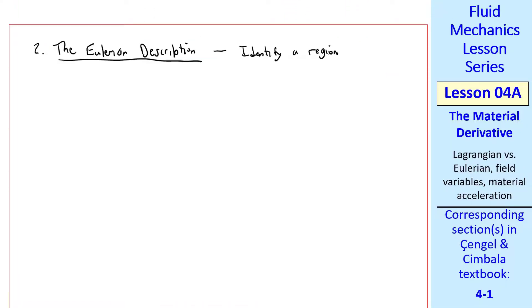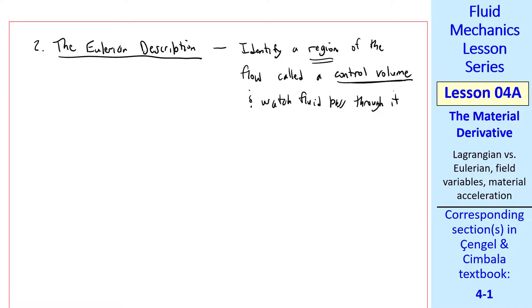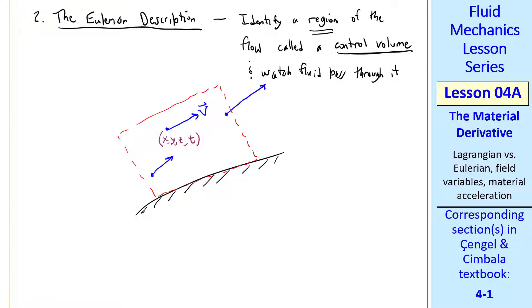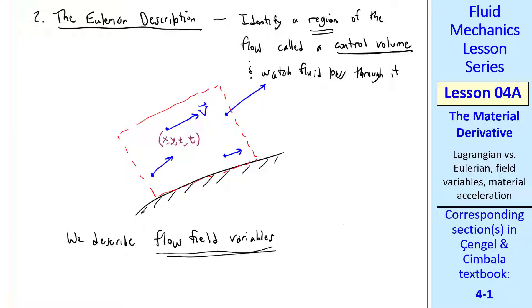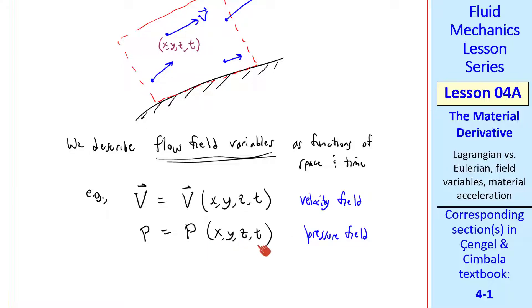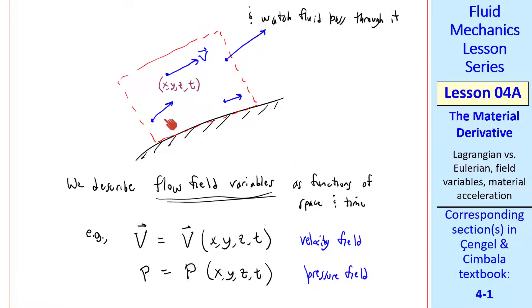The second common description is called the Eulerian description. Instead of following individual fluid particles, we identify a region of the flow called a control volume, and we watch the fluid pass through it. For example, take some flow along a wall, and we're interested in this region or control volume. In particular, we're interested in the velocity vector at some point x, y, z, and if it's unsteady, also at some time t. At other points in the flow, the velocity vector may be different in both magnitude and direction. So instead of following fluid particles, we describe flow field variables like velocity and pressure as functions of space and time. The velocity field would be velocity as a function of x, y, z, and t. Similarly, we can define a pressure field, p as a function of x, y, z, and t. Notice that p is a scalar, whereas v is a vector, but they're both flow field variables.